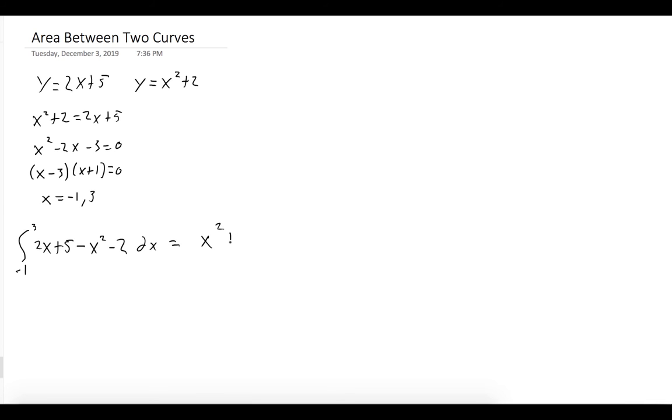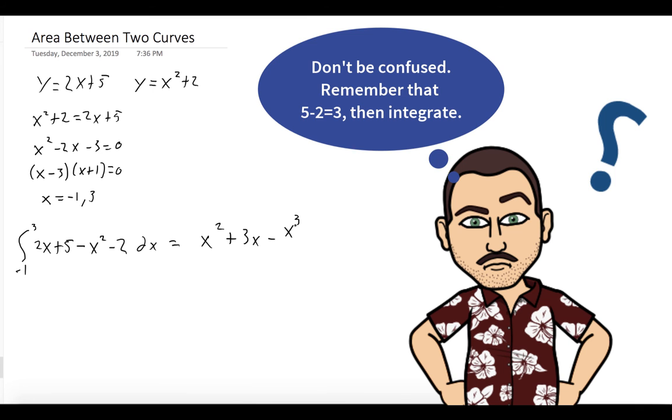And that's x squared plus 3x, I combine some terms, minus x to the third over 3. And we'll evaluate at negative 1 and 3.